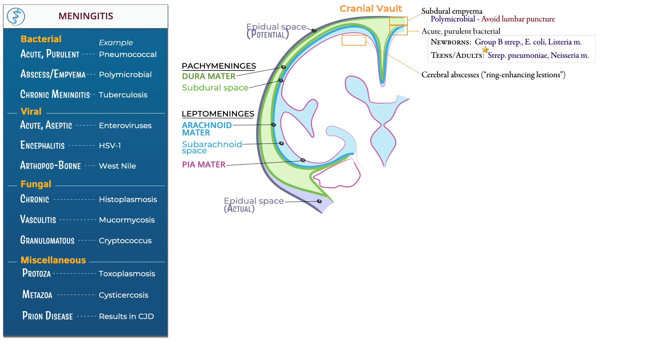let's jump down to cerebral abscesses. These are ring-enhancing lesions. Note that there are a variety of non-infectious causes of ring-enhancing lesions as well, most notably brain metastases. It's best to consider this class to be polymicrobial since many things can cause them, but some standout causes include toxoplasmosis, fungal infections such as cryptococcus, histoplasmosis, candidiasis, and coccidioides, and a variety of bacterial causes as well.